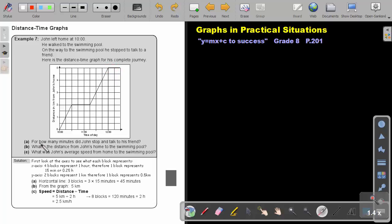For how many minutes did John stop and talk to his friend? Now, it's very important first look at the axis to see what each block represents. If you look at the x-axis, each block represents one hour. That's 10 to 11. There's 1, 2, 3, 4. Remember, one hour will be 60 minutes.